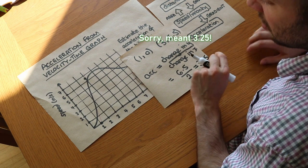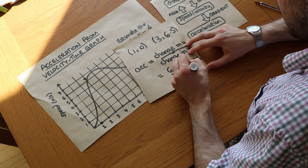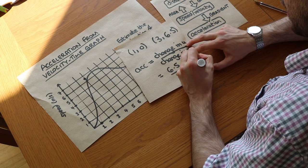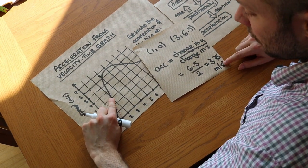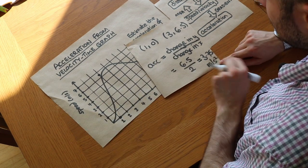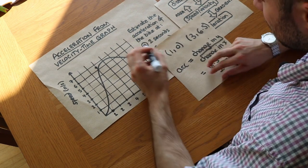And because it's acceleration, we need to make sure we put the right unit, and the unit is meters per second squared. So the gradient at this particular point here, and the acceleration, is 3.75 meters per second squared. So that's part A,